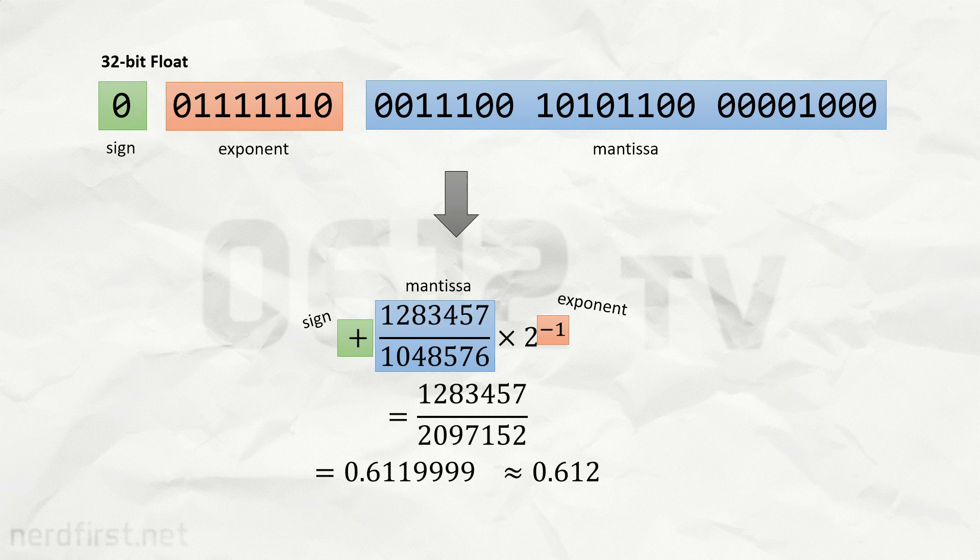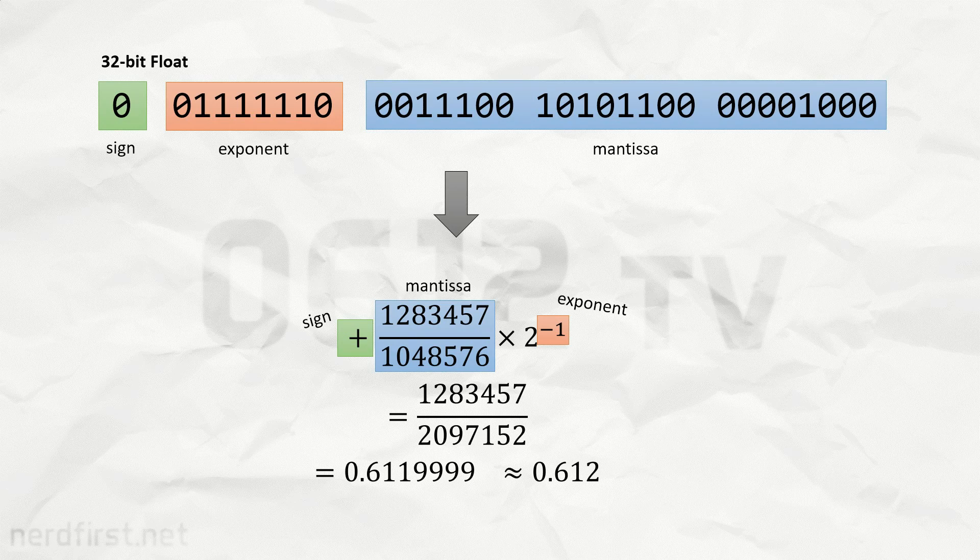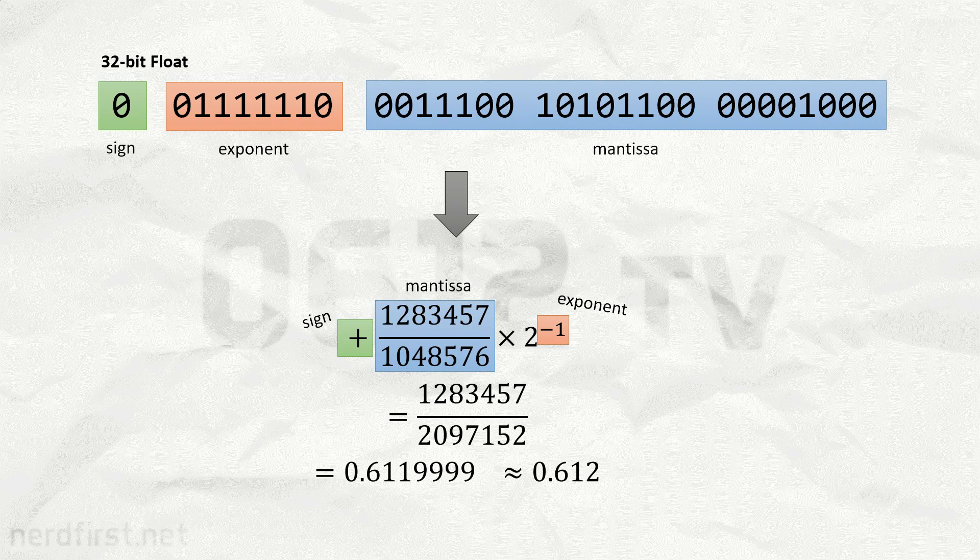Hello and welcome back to another Random Wednesday episode. So floating point numbers, as a very quick recap, consist of a sign, an exponent, and a mantissa. Today is largely focusing on the exponent part of things.